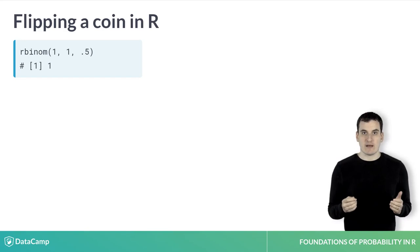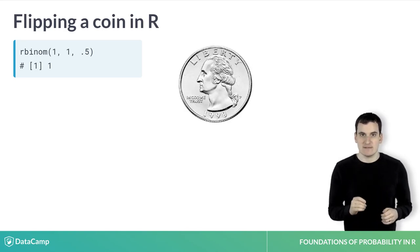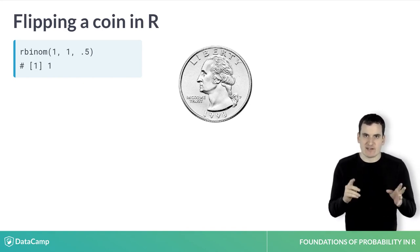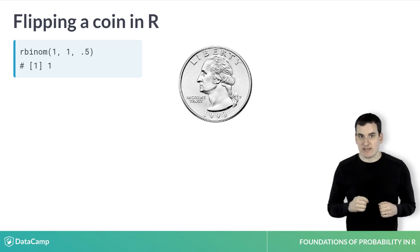There are two possible outcomes of this function, 0 or 1. In this case, we got a result of 1. Throughout this course, we're going to interpret a 1 as heads. Recall that the starting bracket 1 bracket simply indicates that this is a vector in R. We can completely ignore it.